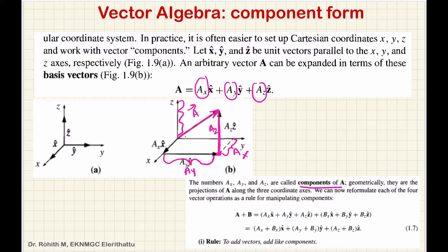Now, this is a vector. Using projection — you can project onto that point, giving ax and ay components. The height gives az, so the z-axis represents the height. In component form, a vector has x, y, z components in Cartesian coordinates.